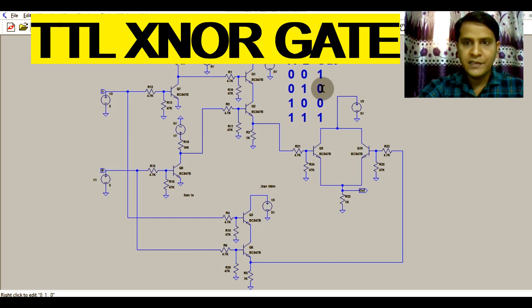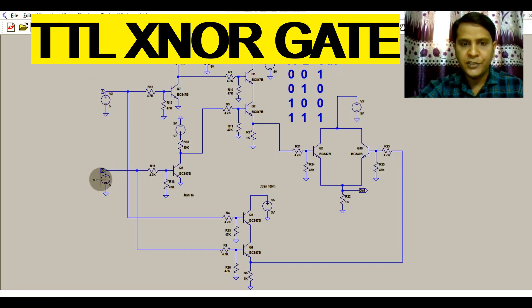So here you can see in the circuit you have two inputs, that is A and B. Here you can see this is A, this is B, and you have one output which is here, that is V out.